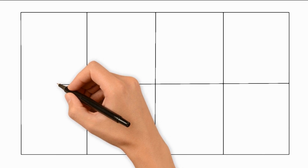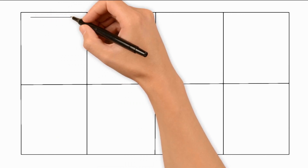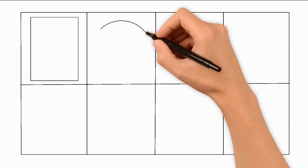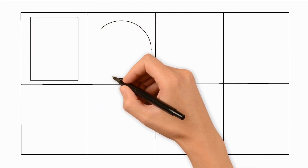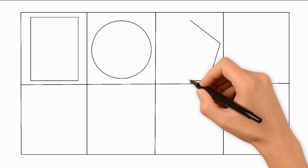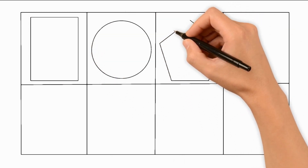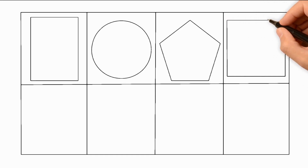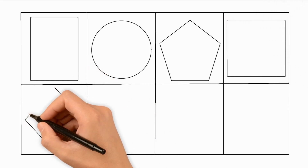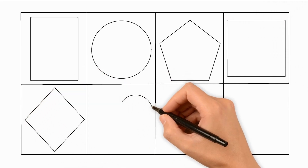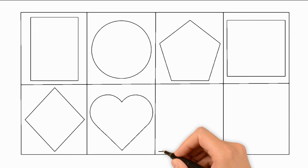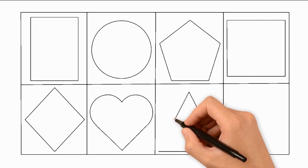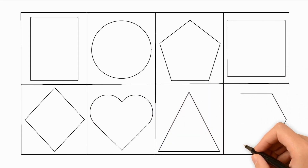Now the shapes: first a rectangle, a circle, a pentagon, a square, a diamond, a heart, a triangle, and a hexagon.